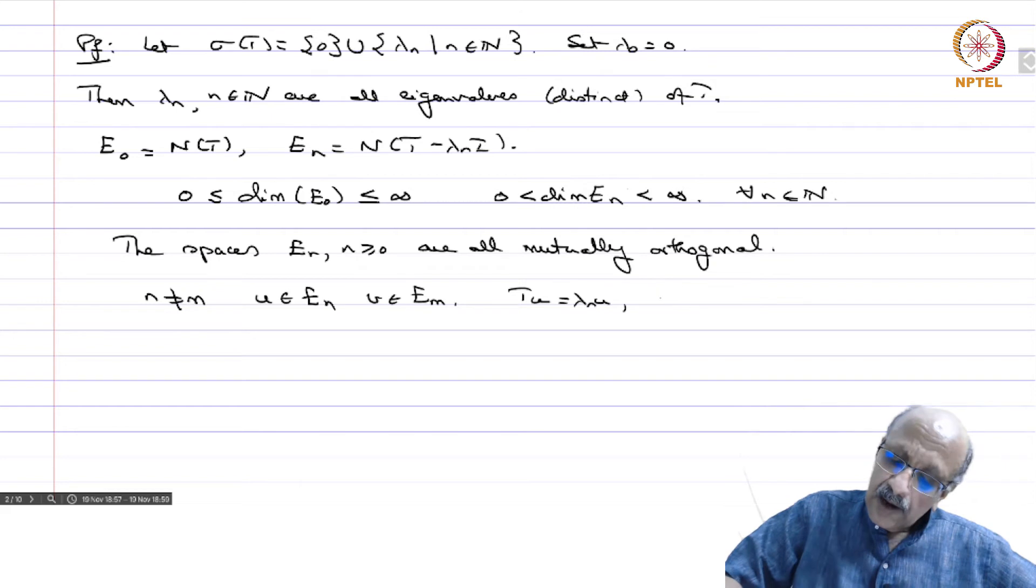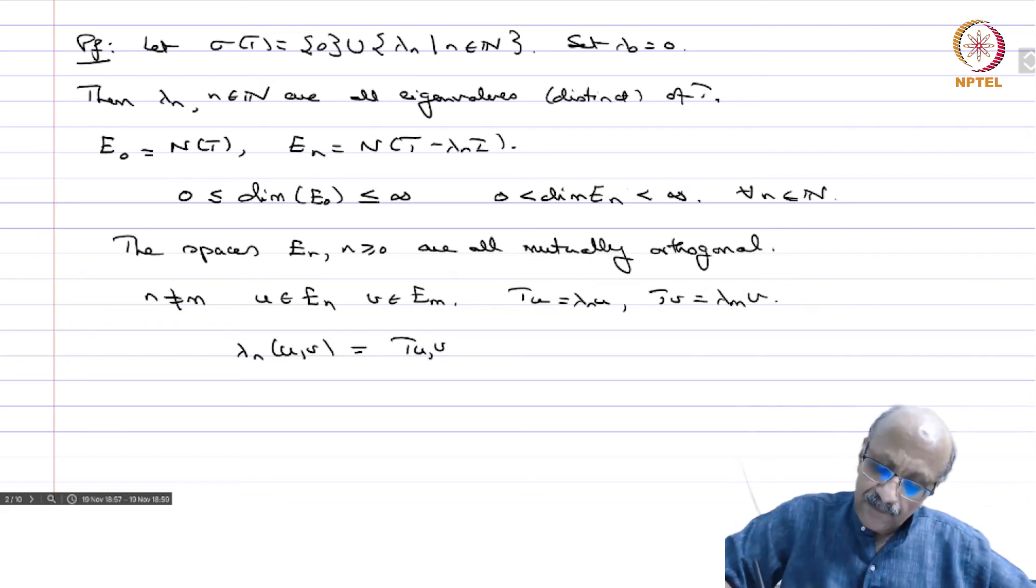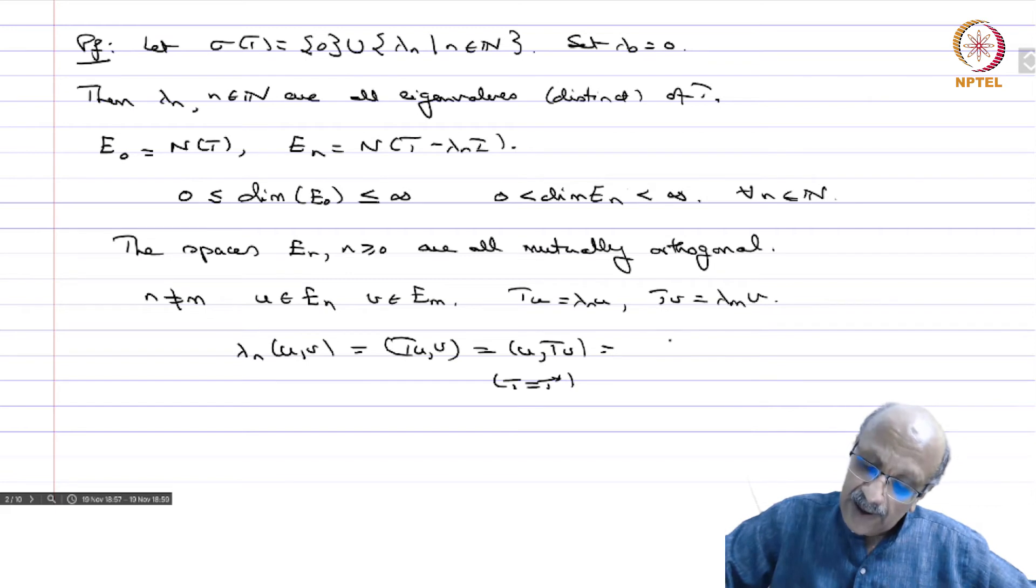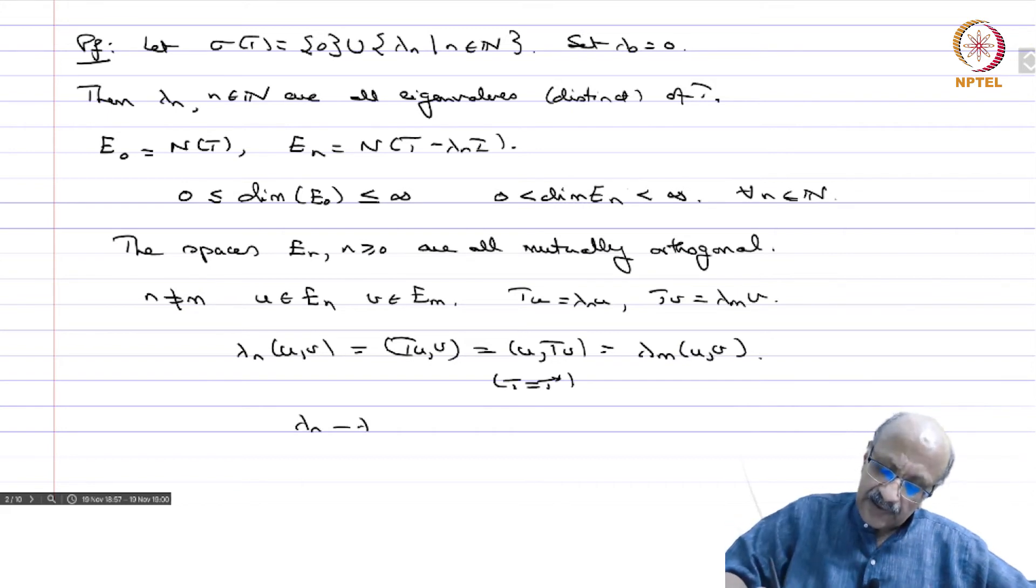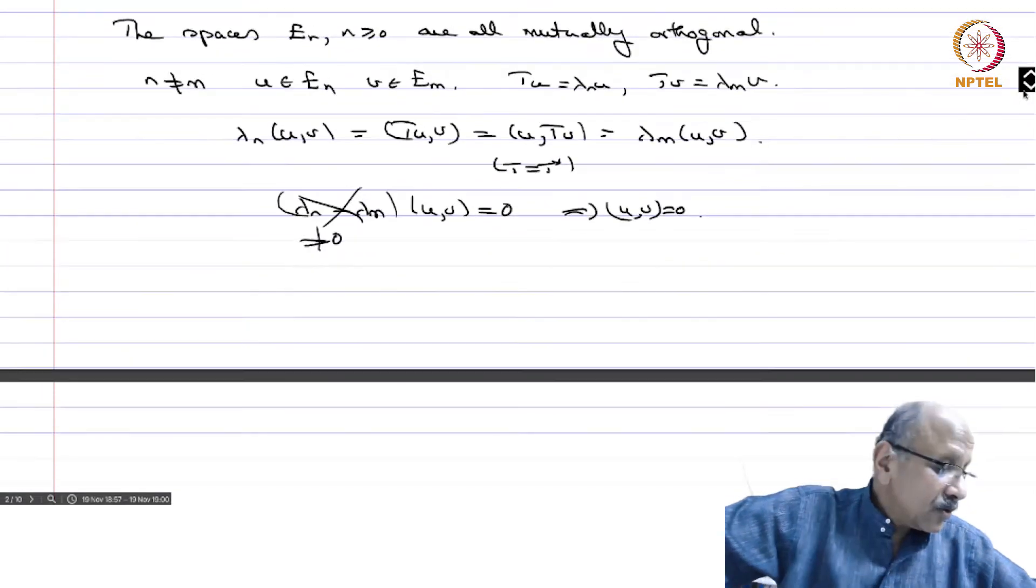T(u) will be lambda_n u and T(v) will be lambda_m v. Then lambda_n <u,v> equals <Tu,v> equals <u,Tv> because T equals T* and that is equal to lambda_m <u,v> and lambda_m is real. So (lambda_n - lambda_m) <u,v> equal to 0 and this is not 0 and therefore <u,v> equal to 0.